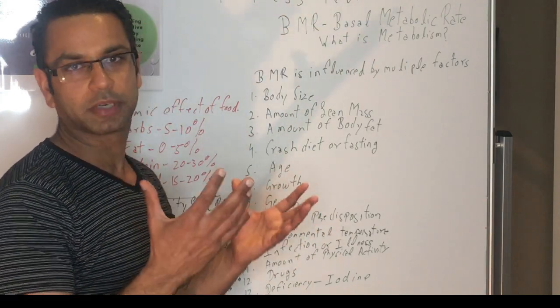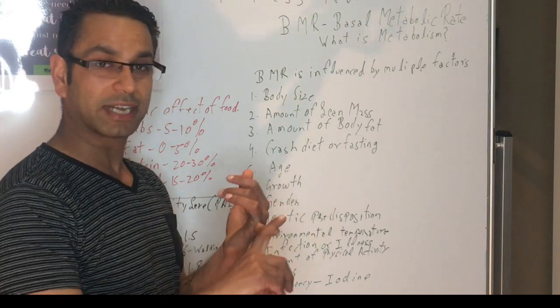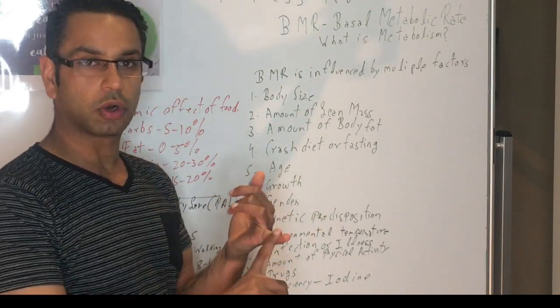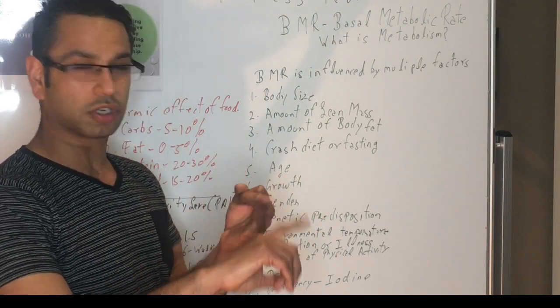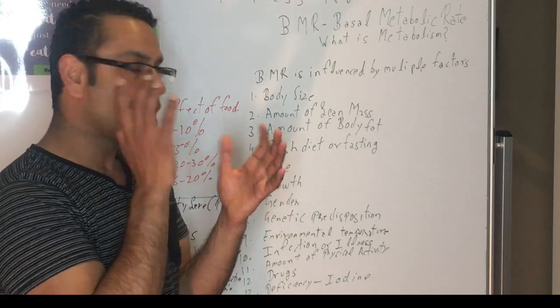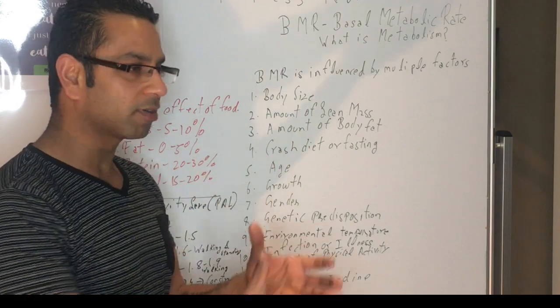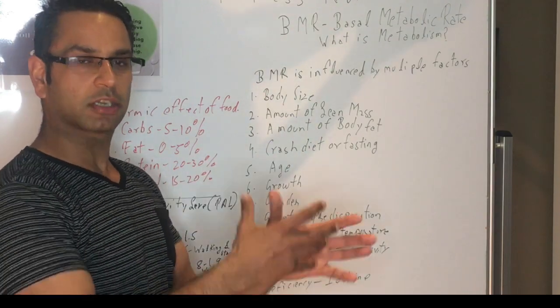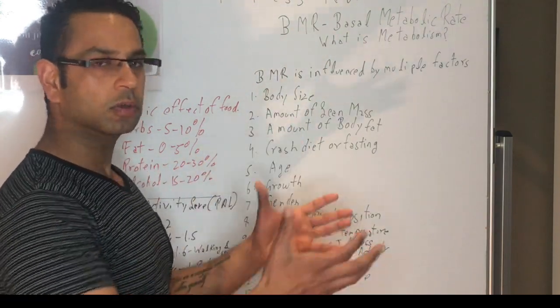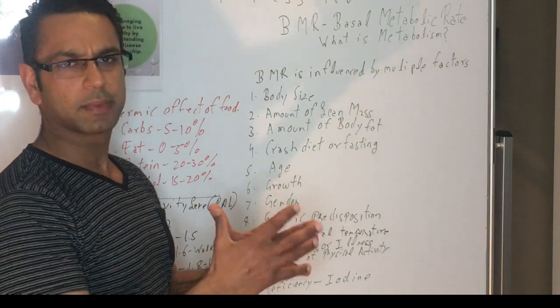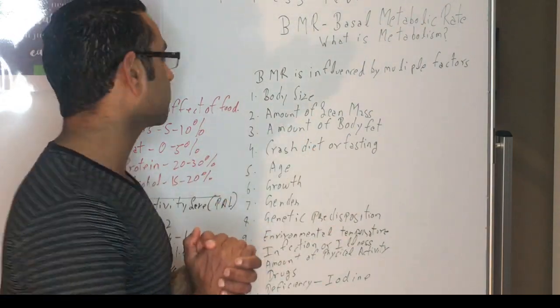So the next one is what is metabolism? The metabolism is every chemical reaction or every reaction pretty much happening in your body, which includes your digestion, cell functioning, nervous system, the way the organs work, the amount of calories each organ is burning including the liver, kidney, intestine, and all. So metabolism is pretty much all the chemical reactions or all the reactions happening in the body.